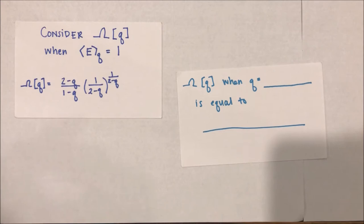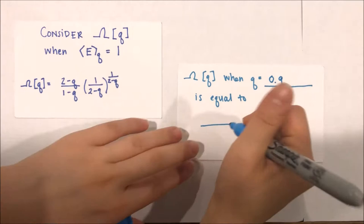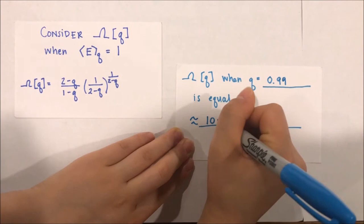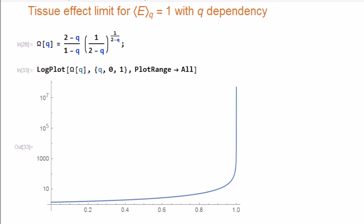I use Mathematica to consider values of omega at q values close to 1. I started with q equals 0.9, and as I added nines to my decimal value, the value omega increased and blew up as I approached 1. This log plot of omega as a function of q demonstrates this limit approach as well. This is extremely comforting because it means that in the extensive case, it takes an infinite tissue effect and thus infinite dose for the probability of surviving cells to approach 0.